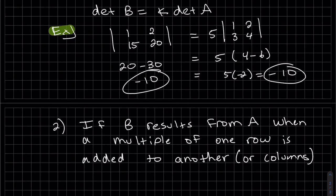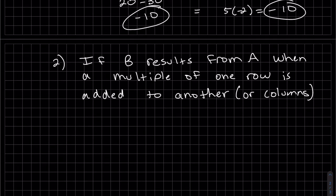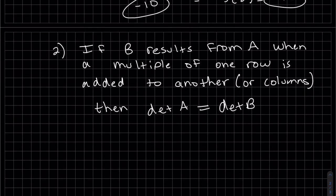So even though it's affected by multiplying one row by a constant, this is our other elementary operation. If B results from A when a multiple of one row is added to another, or the columns, then the determinants are not affected actually.